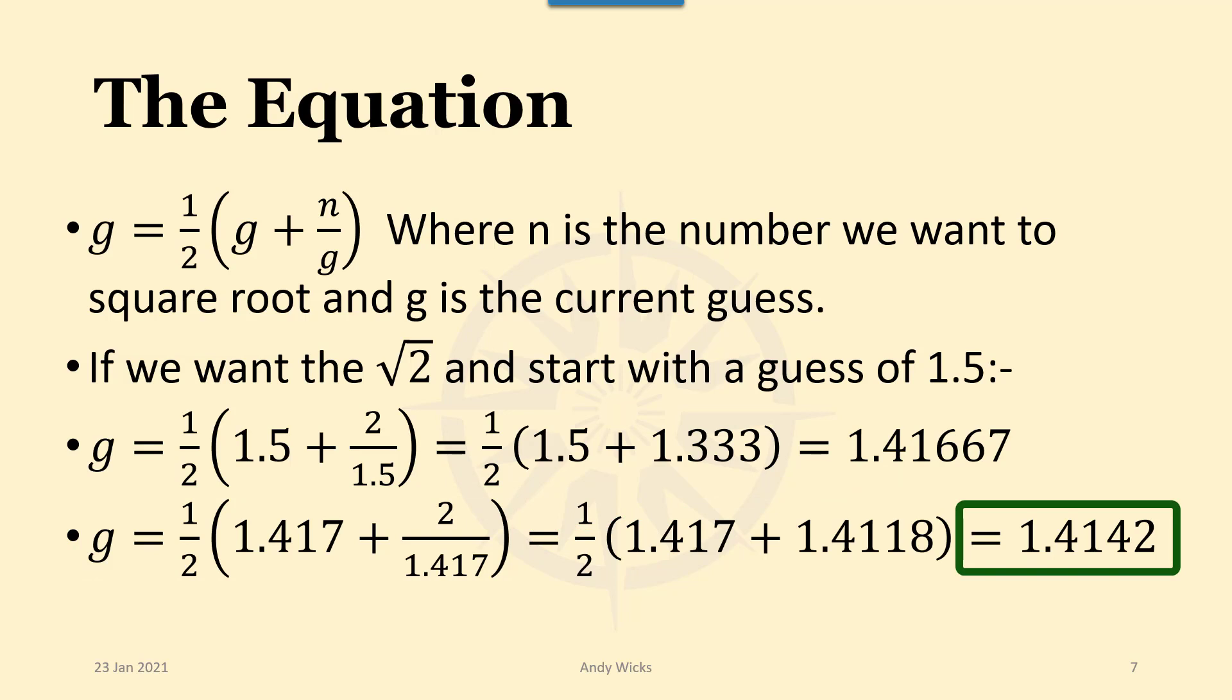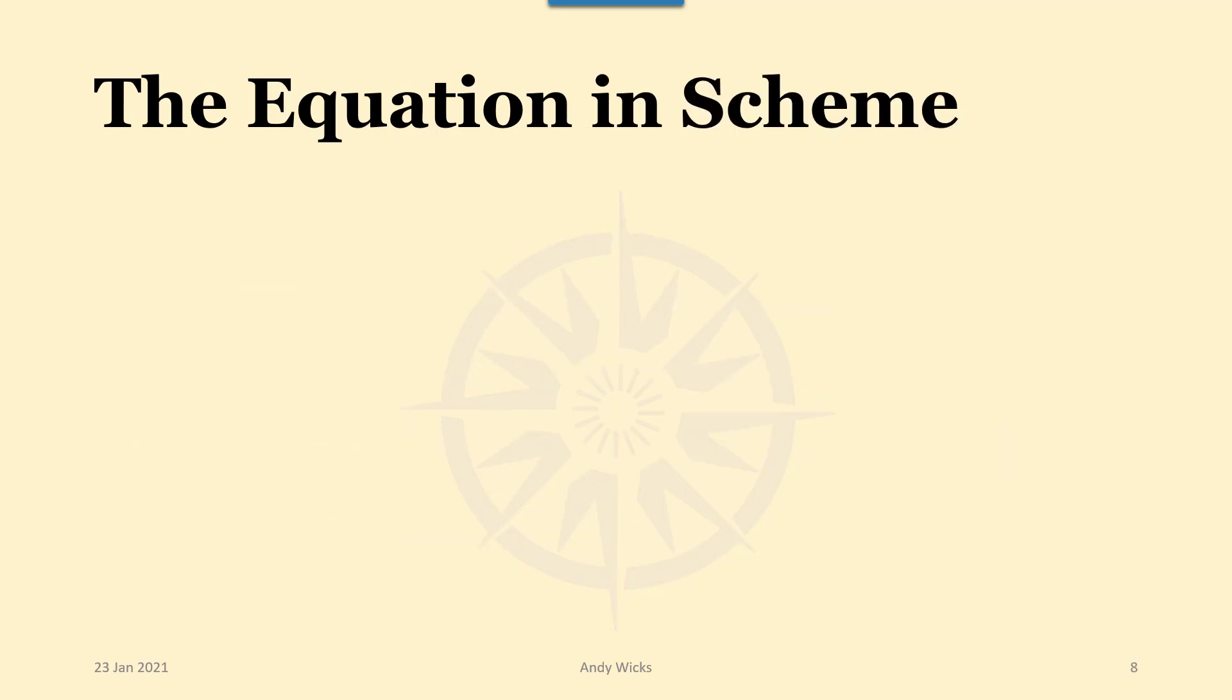And that then gives me an answer of 1.4142. And we can keep doing this until we get the answer as accurate as we want it. What goes in at one end produces a result and that gets fed in again at the next time round. So let's have a look at creating this equation that was on the previous slide in Scheme.